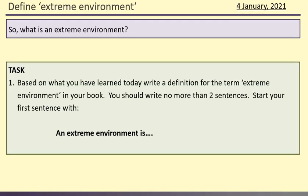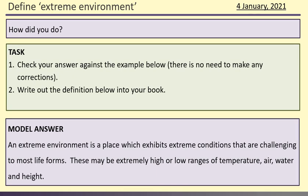So what is an extreme environment? Based on what you've learned today, try and write a definition for the term extreme environment in your book. You don't need to write more than two sentences. If you're struggling to get started, you can begin with 'An extreme environment is...' Pause the video, write your two sentences, and then come back. Check your answer against the example: 'An extreme environment is a place which exhibits extreme conditions that are challenging to most life forms. These may be extremely high or low ranges of temperature, air, water, and height.' Copy this into your book.